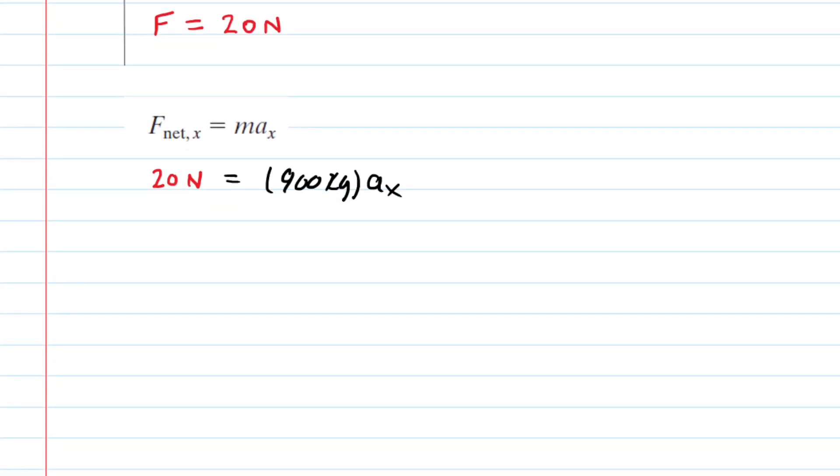We can solve for the acceleration by dividing both sides by 900 kilograms, and the acceleration along the X direction is approximately 0.0222 meters per second squared. This is the correct answer to Part A.